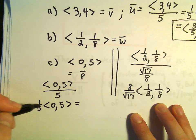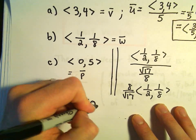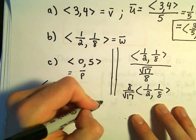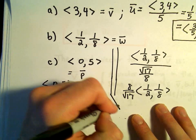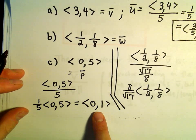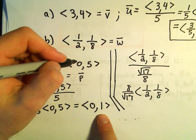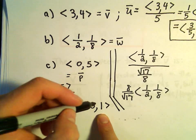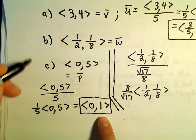Well, if we multiply, if we distribute our 1 fifth, our first component will still be 0. Our second component will turn into a 1. And now, we've got a unit vector that's pointing in the same direction as the original one, but simply has a length of 1.